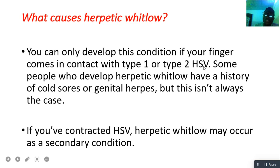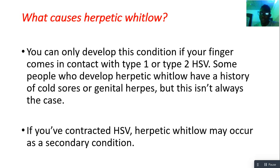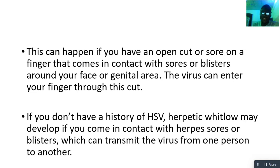You can only develop this condition if your finger comes in contact with type 1 or type 2 herpes simplex virus. Some people who develop herpetic whitlow have a history of cold sores or genital herpes, but this isn't always the case. If you have contracted HSV, herpetic whitlow may occur as a secondary condition — meaning there is a primary condition caused by HSV, and herpetic whitlow is more like a byproduct of that underlying condition.